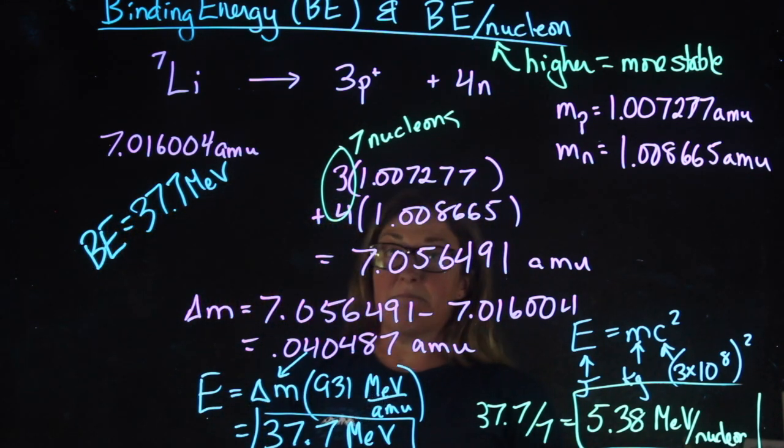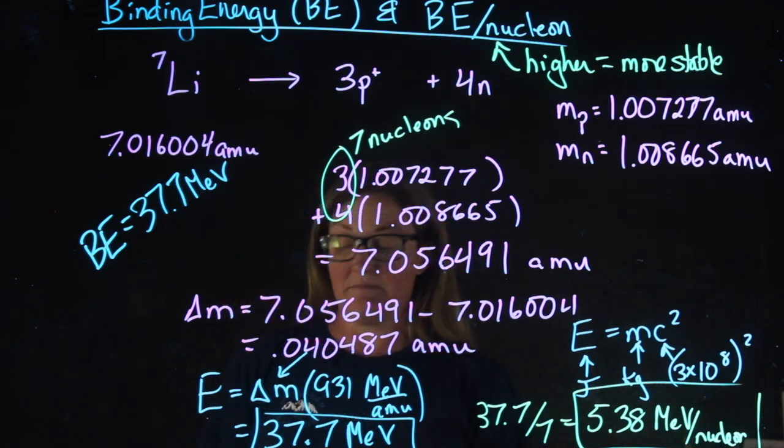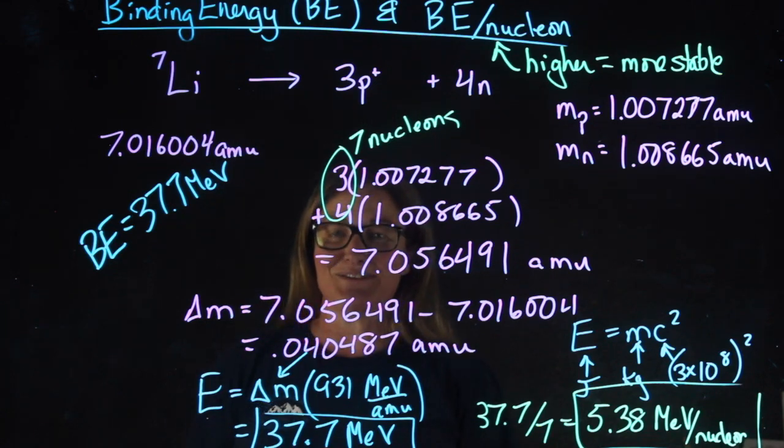I want you to try to find the binding energy and the binding energy per nucleon of carbon-11, and then come back for the solution.